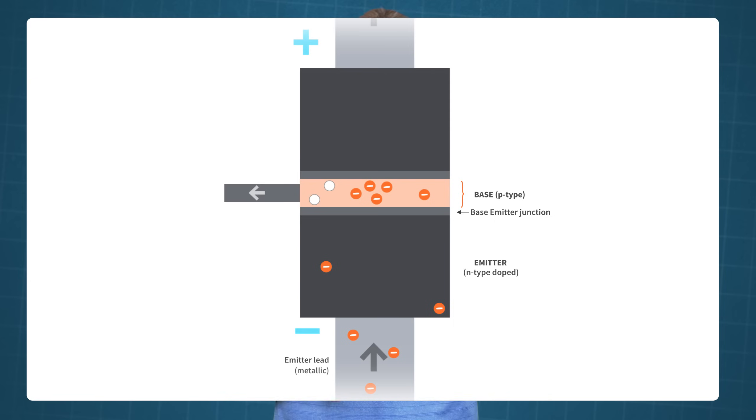The P-type base region is just lightly doped, which means that it doesn't have that many holes in it. In this case, only a small percentage of the free electrons from the emitter region can recombine with the holes in the base region. The small number of free electrons from the emitter region that recombine with the holes in the base region move through the base region as valence electrons.